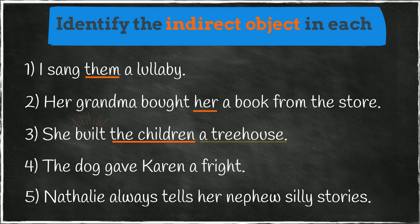Number four. What was given? A fright. This is the direct object. Who received the fright? Karen. The indirect object is Karen.